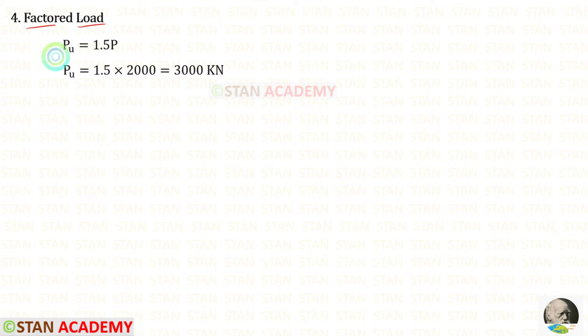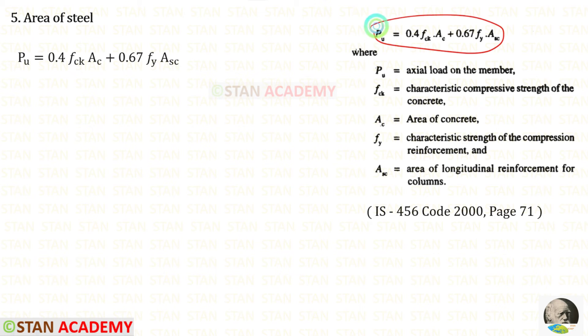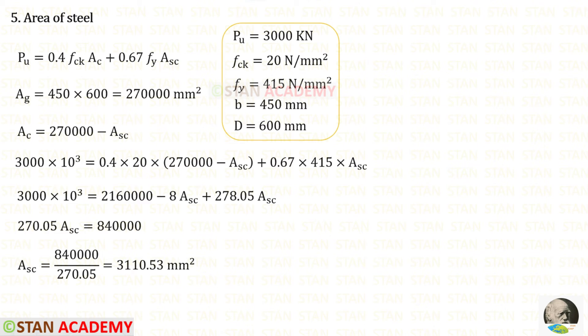Now let us find the factored load PU. The formula is 1.5P. The load P is 2000. 1.5 into 2000 we will get 3000 kN. Now we can use this formula and find the area of the reinforcement. In this formula AC is the area of the concrete and ASC is the area of longitudinal reinforcement for the columns. First we have to find the total area, that is the gross area 450 into 600. We will get that. We know that the gross area is equal to area of the concrete plus area of the reinforcement. So AC will be AG minus ASC. In this equation let us apply all of the values.